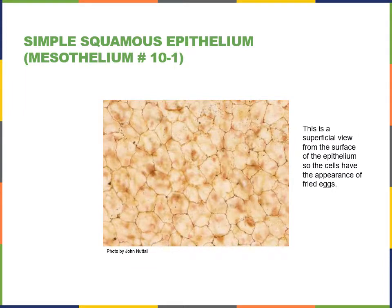Here's another example of a simple squamous epithelium — the mesothelium, the simple squamous epithelium found in a serous membrane lining the visceral body cavities. This is a superficial view looking at the epithelium from the surface, so the cells have the appearance of fried eggs laid side by side, where the nucleus is like the yolk of the egg. If we were to look at these cells from the side, they would be very thin, but from the surface they have a wide width.